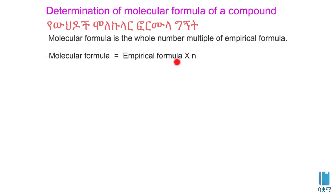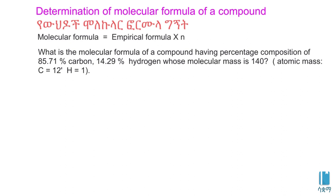What is the molecular formula of a compound having percentage composition of 85.71% carbon and 14.29% hydrogen, with molecular mass of 140? Atomic mass: C = 12, H = 1.